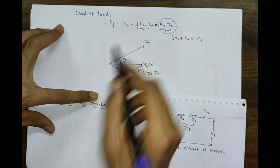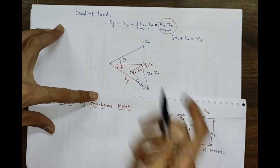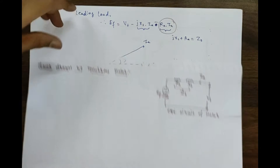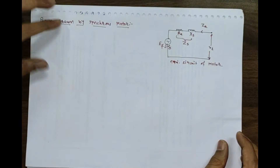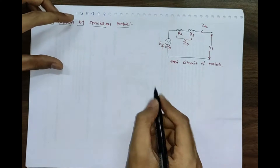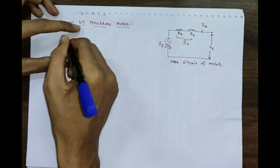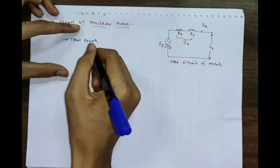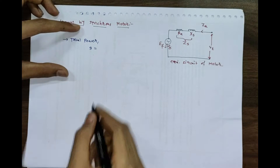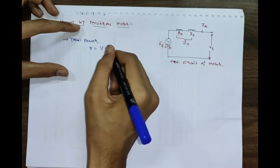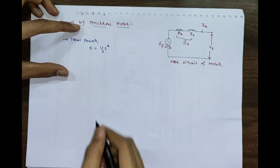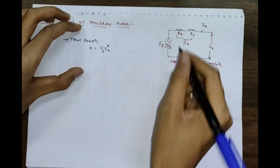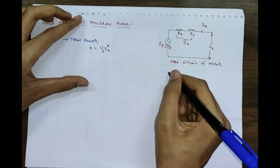You can see it will be something like this, and if you want to understand how we draw this, just check my previous video. Now we are interested to find the total power S, which we can write as V times I conjugate, where V is the terminal voltage Vt and I is the armature current Ia.